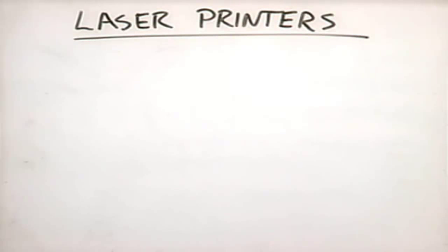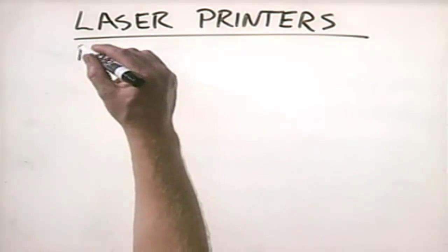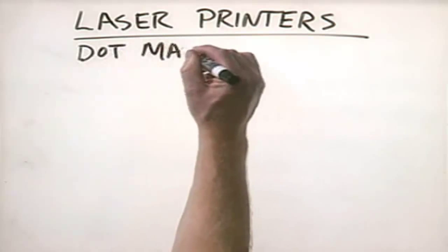In this lesson we'll talk about laser printers. Laser printers are fantastic - they produce very high quality output for a relatively low price. Let's talk about how it works. Other printers such as a dot matrix or an inkjet printer print data one line at a time.